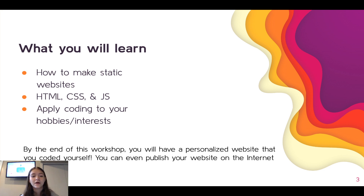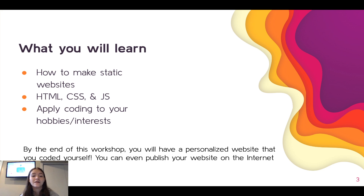You'll also be able to apply your coding to hobbies and interests. For example, maybe you're a great photographer and you want to make a website displaying your photography. Maybe you're a high school student or beyond and you're looking for a way to show your accomplishments, awards, and achievements — you could definitely make a portfolio website. You can even make websites about your favorite animal. By the end of this workshop, you'll have a personalized website that you coded yourself and you'll be able to replicate pretty much any other front-end website with these skills.